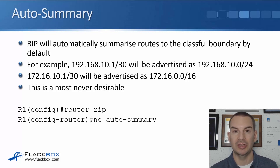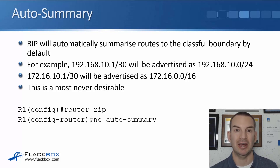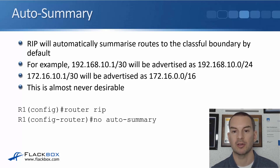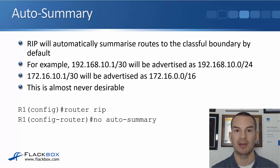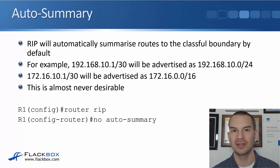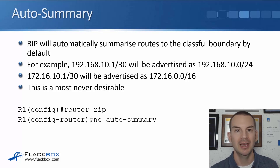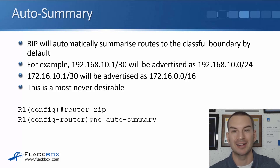Any address beginning with 192 is a class C address with a default mask of /24, so rather than advertising it as /30, RIP summarizes it to /24. Similarly, an interface with IP address 172.16.10.1/30 would be advertised as 172.16.0.0/16, because that's a class B address defaulting to /16. This is almost never desirable, since modern real networks aren't designed so that summarization ranges fall exactly on classful boundaries.